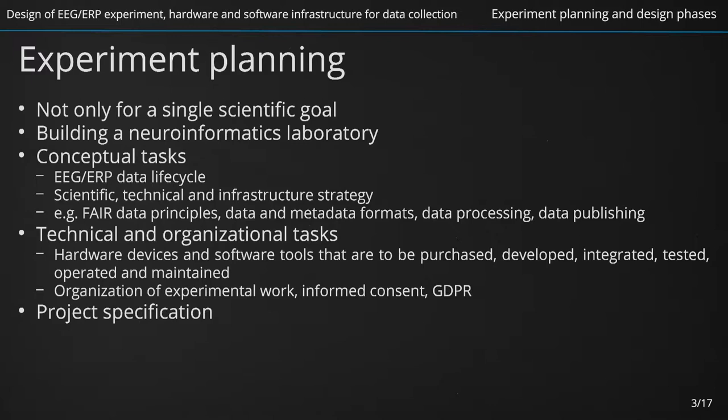Of course, this cannot be fully eliminated but still can be prevented by having vital strategies and infrastructure. Examples of such vital strategies and infrastructure are, for example, continuous implementation of FAIR data principles, design and implementation of standardized EEG and ERP data and metadata formats, proposal, design and implementation of EEG data processing methods based on machine learning, and publication of raw and interpreted data. These strategies have to be supported by underlying technical means and organization processes that facilitate the overall life cycle of EEG data.